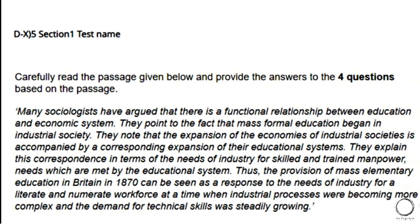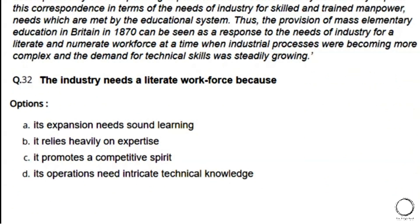Next passage: Many sociologists have argued that there is a functional relationship between education and the economic system. They point to the fact that mass formal education began in industrial society, and that the expansion of industrial economies was accompanied by a corresponding expansion of the educational system. This correspondence is explained by the needs of industry for skilled and trained manpower — met by the educational system. The provision of mass elementary education in Britain in 1870 is seen as a response to the need for a literate and numerate workforce as industrial processes grew more complex. Question: The industry needs a literate workforce because — answer: option D — its operations need intricate technical knowledge.